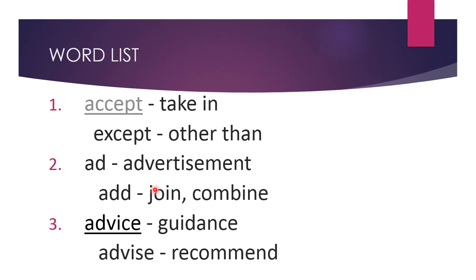This is the first list with letter A. The first word is 'accept', which means to receive or taken. The homonym is 'except', which means other than. So 'accept' means to receive something, and 'except' means other than.